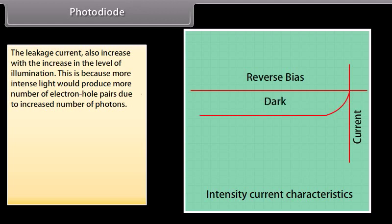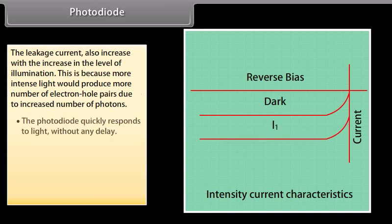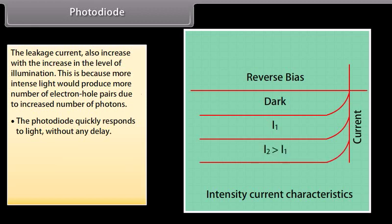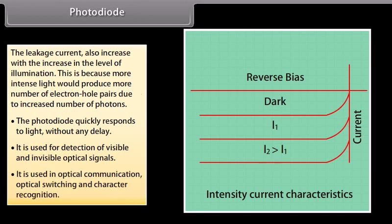This leakage current also increases with the increase in the level of illumination, because more intense light produces more electron-hole pairs due to an increased number of photons. The photodiode quickly responds to light without any delay. It is used for detection of visible and invisible optical signals, and is used in optical communication, optical switching, and character recognition.